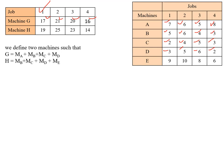Next, we move to machine H — which is M_B + M_C + M_D + M_E. For job 1: 5 + 2 + 3 + 9 = 19. For job 2: 6 + 4 + 5 + 10 = 25. For job 3: 4 + 5 + 6 + 8 = 23. For job 4: 3 + 3 + 2 + 6 = 14. So we have converted the problem into a 2-machine problem with machines G and H.